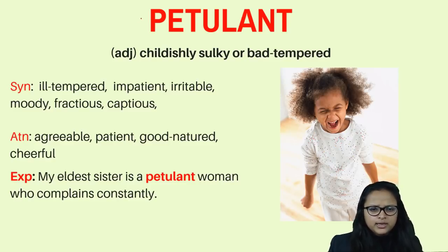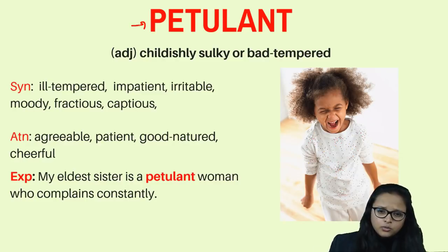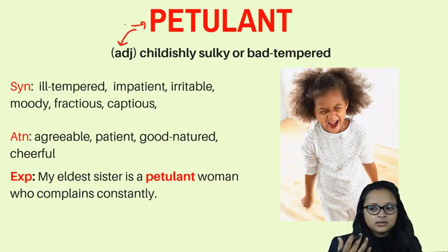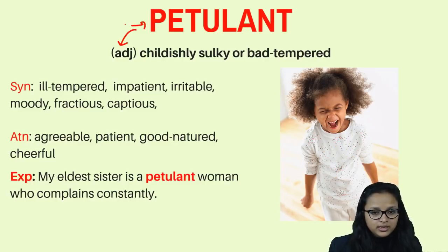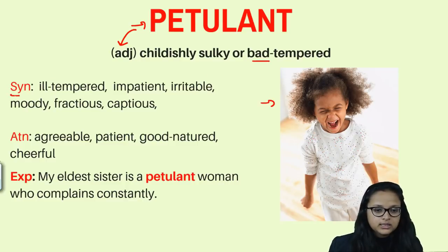The second word is petulant. Petulant is used when a child is extremely stubborn or bad-tempered — he gets angry over petty things, like demanding a toy right now and starting to cry. That kind of behavior is called petulant. It is an adjective describing a characteristic of a person's personality. If a person is petulant, it means they are bad-tempered and get angry over small things.